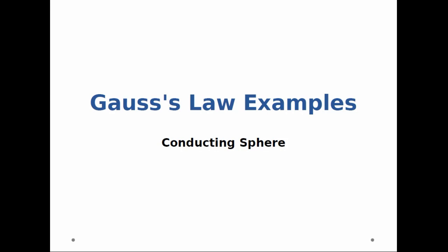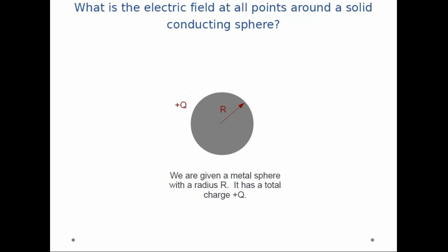We're going to look at an example with Gauss's law, specifically a conducting sphere. So I give you a metallic sphere, it has radius R, and it has a total charge plus q on it. And I ask, what is the electric field at all points around the solid conducting sphere?